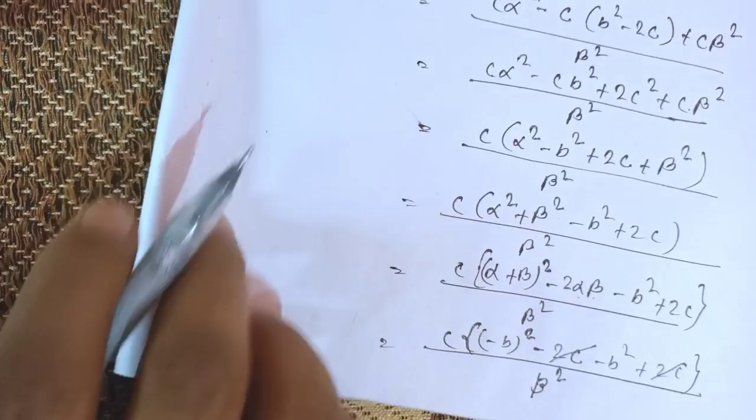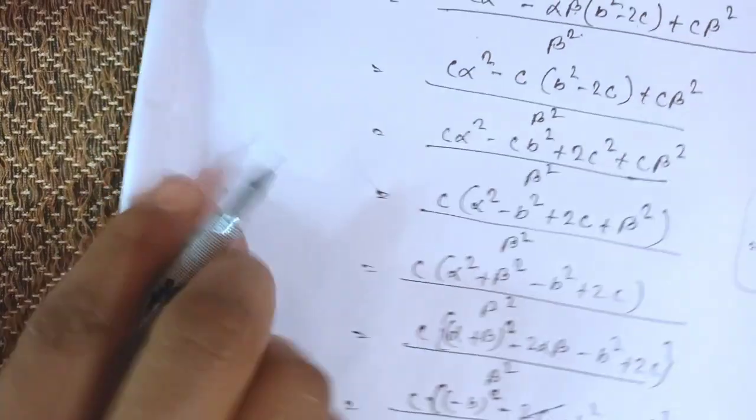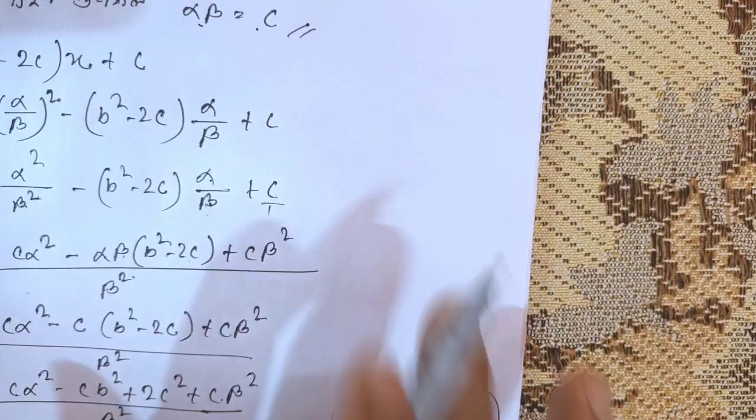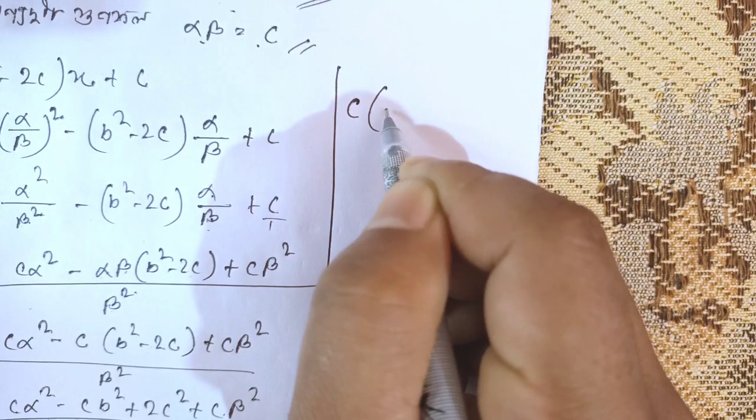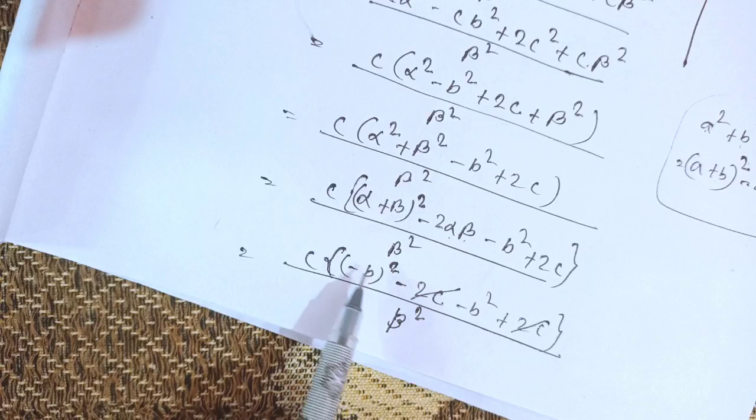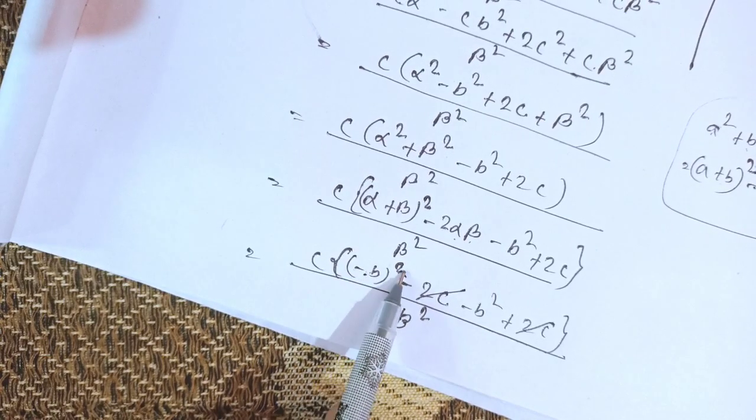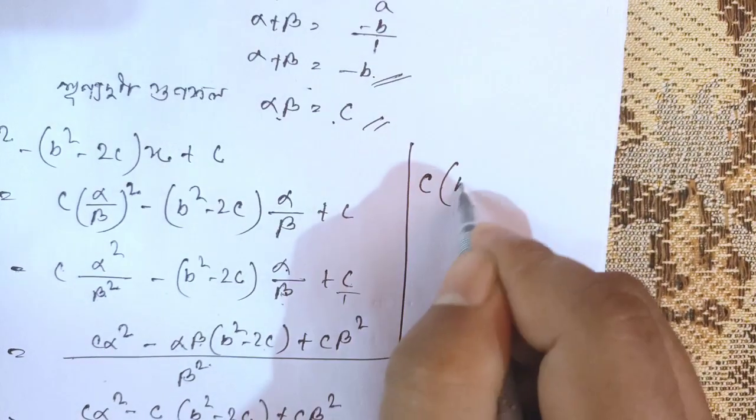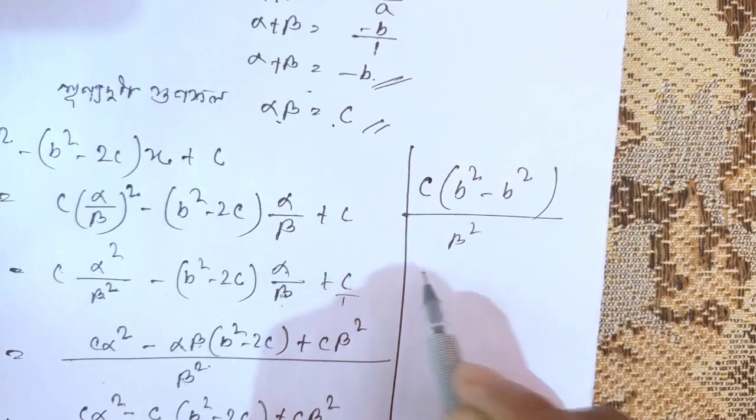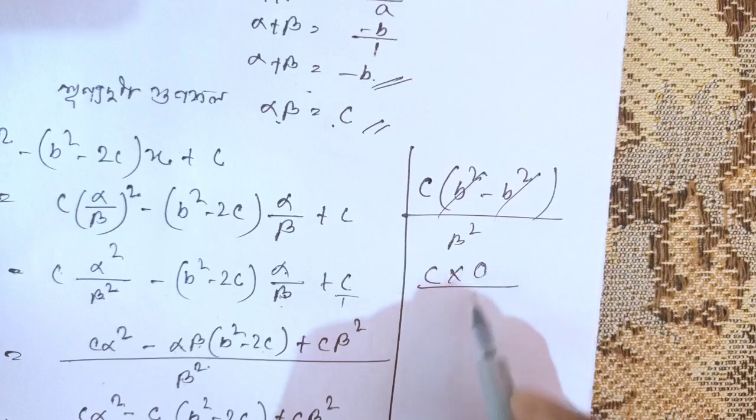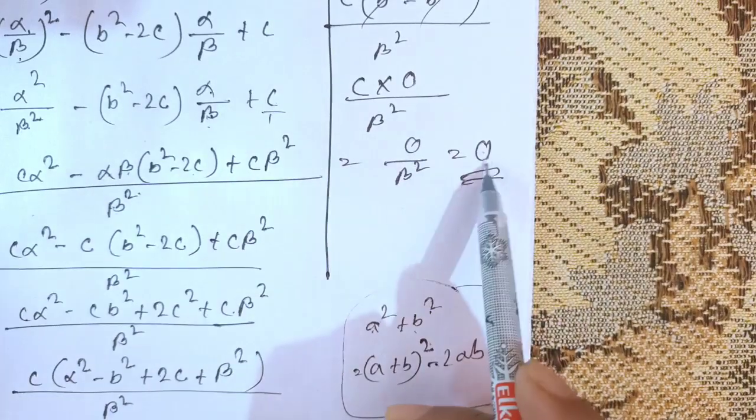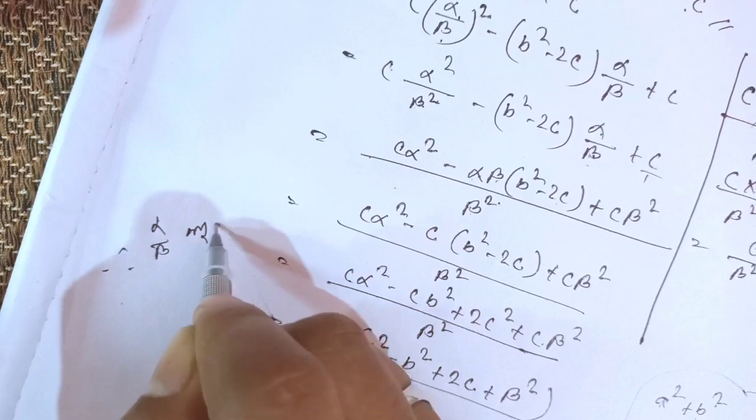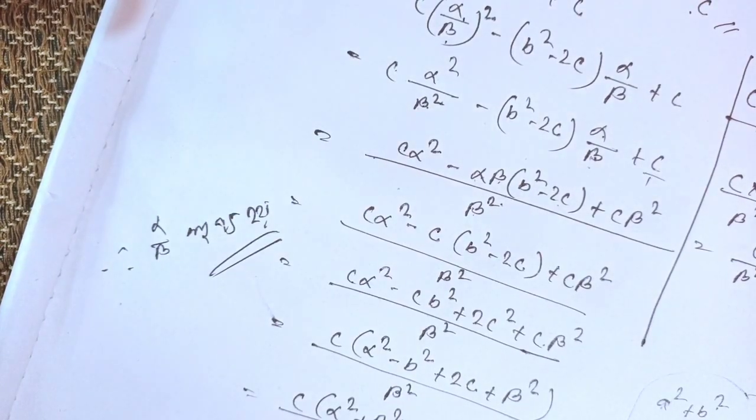After simplification, we get c·b²/β² minus b²/β². The b² terms cancel: c - c + ... equals zero/β², which equals zero. Therefore, when we put α/β into the polynomial, we get zero. This proves that α/β is a zero of the polynomial. That's the complete solution.